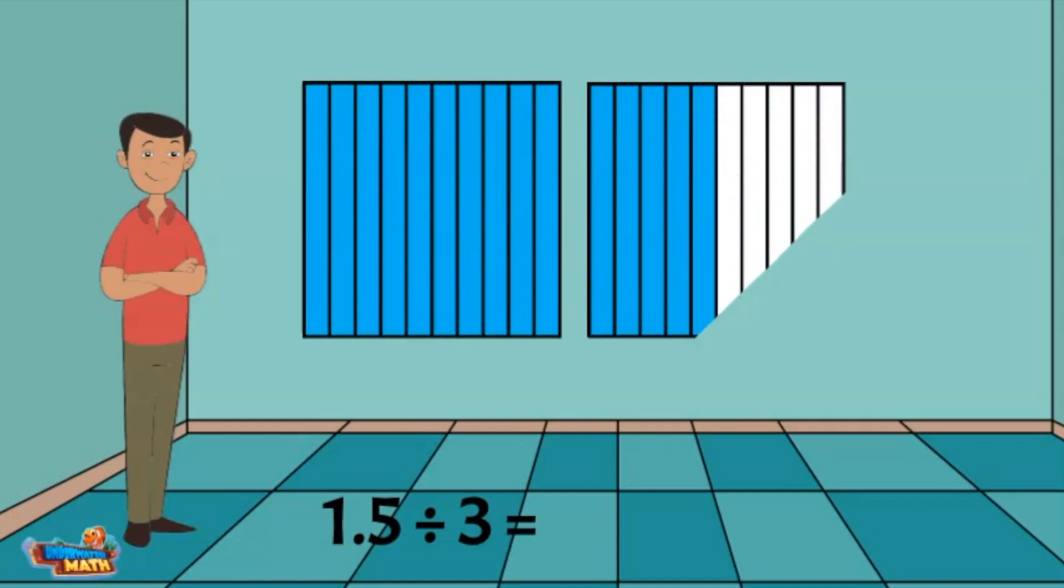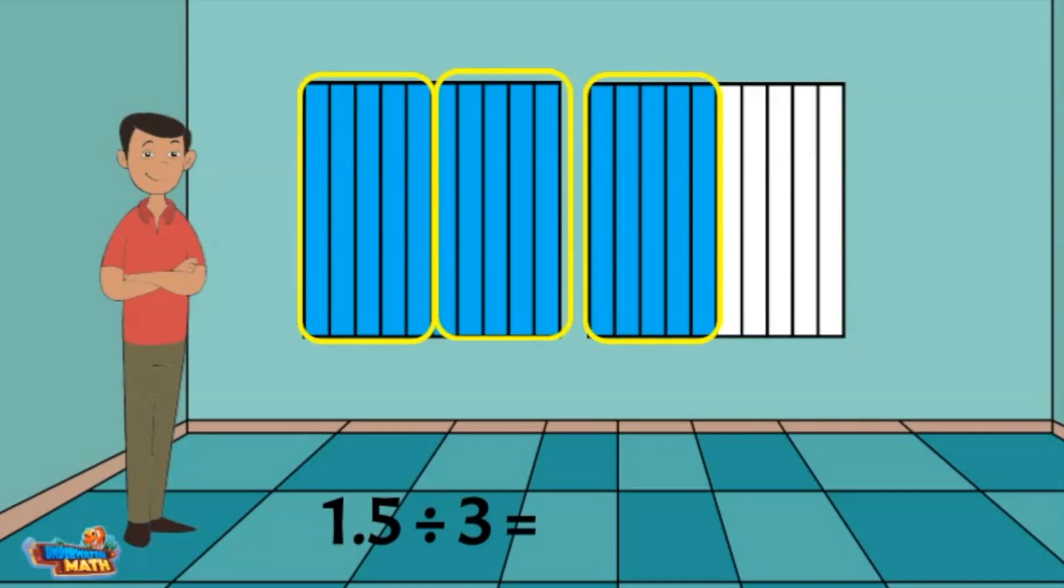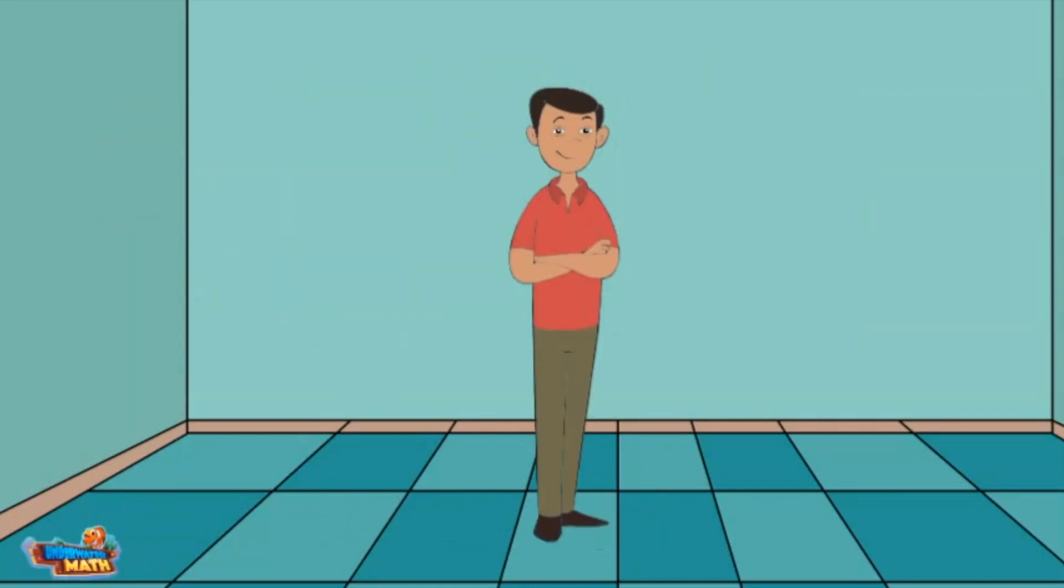The first model represents one whole. The second model represents five tenths because five of the ten columns are shaded in. Now we will divide the blue shaded quantity into three equal groups. Each group has five tenths in it. The answer to one and five tenths divided by three equals five tenths.